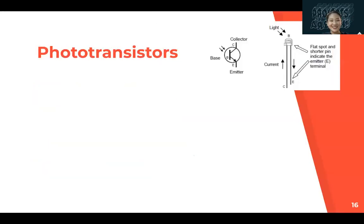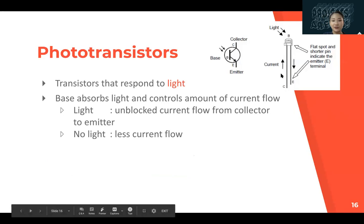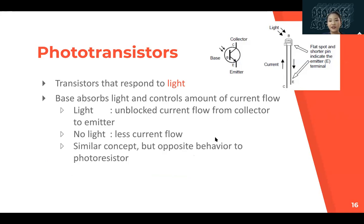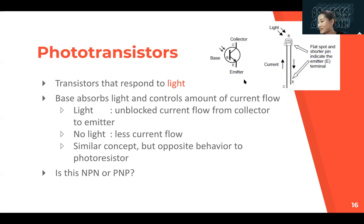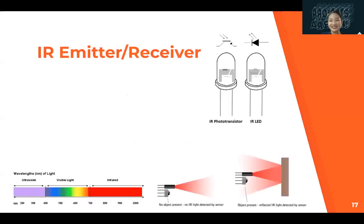Photo transistors are transistors that respond to light. The base absorbs light and controls the amount of current flow. With a lot of light, the transistor is on and current flows from collector to emitter; with no light, there's less current flow. This is similar to how photoresistors work but can behave oppositely depending on how you wire up the circuit. Based on the diagram shown, this is an NPN transistor because the arrow is not pointing in.